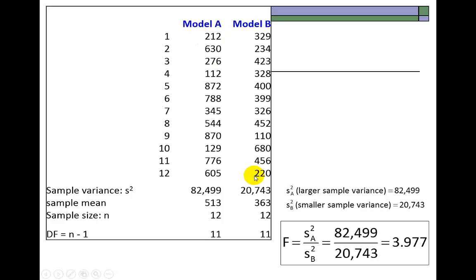So, here we have our data set. There are 12 readings, 12 observations right here. And, degrees of freedom would be 12 minus 1, which is 11 for each of them. Here's our calculated F statistic. Placing the larger sample variance on top, which is the variance for model A. And, that of B at the bottom, we find a ratio of 3.98 approximately. What then is a critical value?